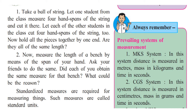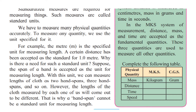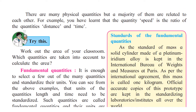In the MKS system, distance, mass, and time are accepted as the fundamental quantities, and these three are used to measure all other quantities. For example, mass is in kilograms or grams, distance in meters or centimeters, time in seconds. Speed would be expressed in meters per second in MKS, or centimeters per second in CGS.